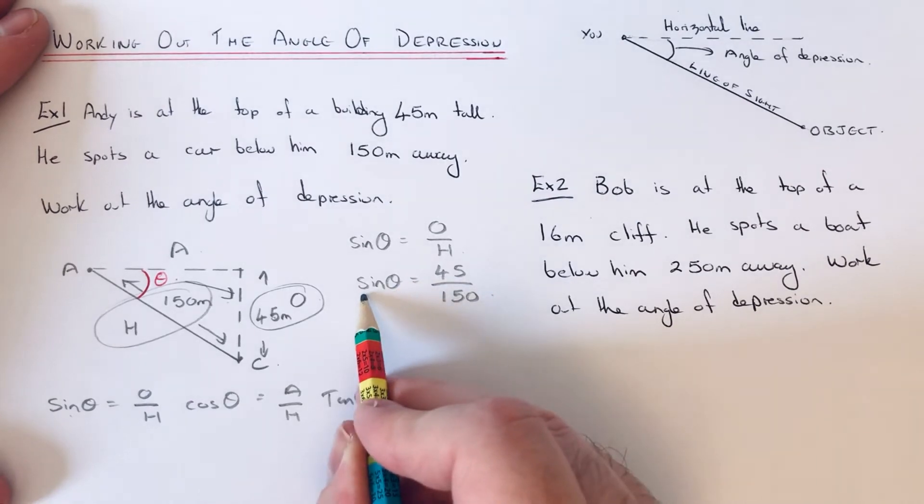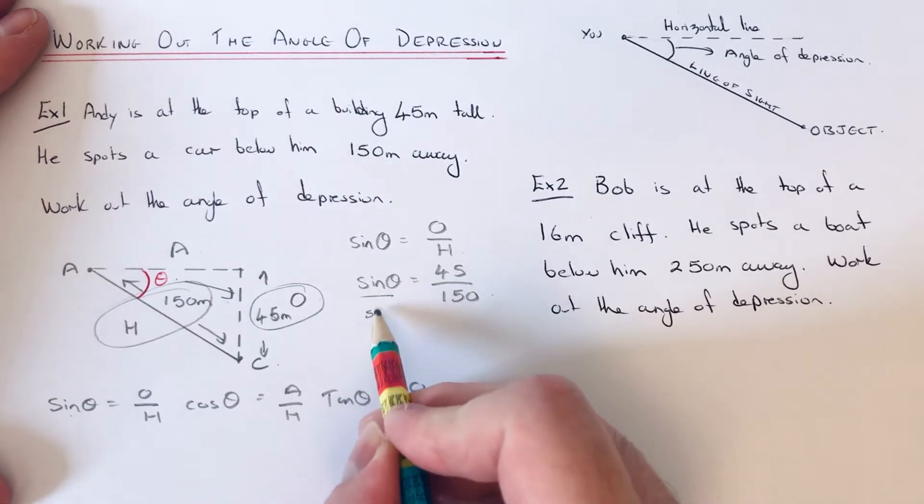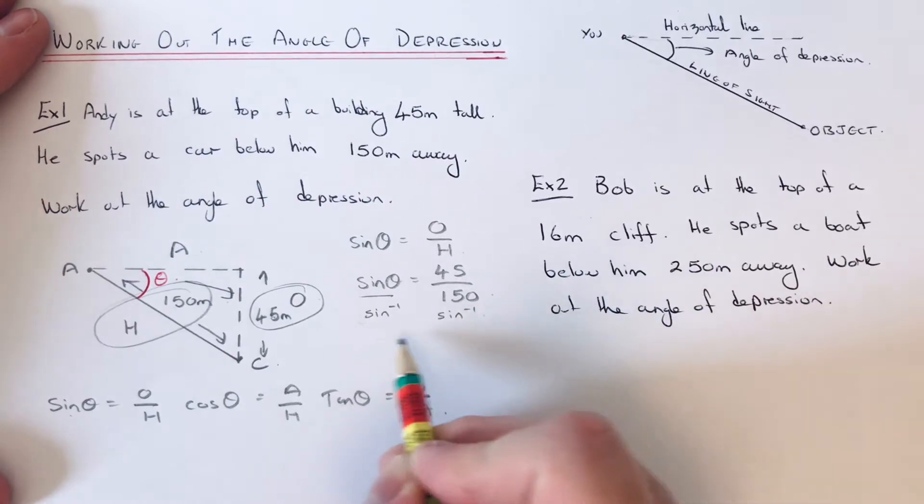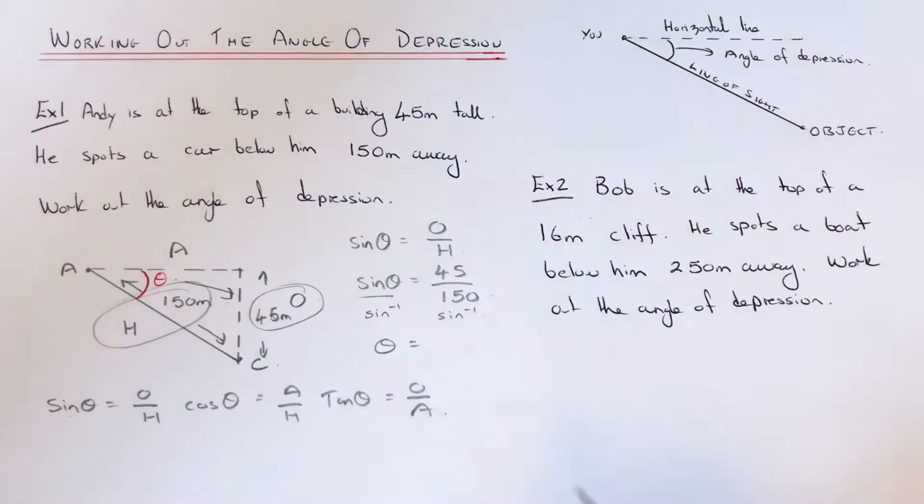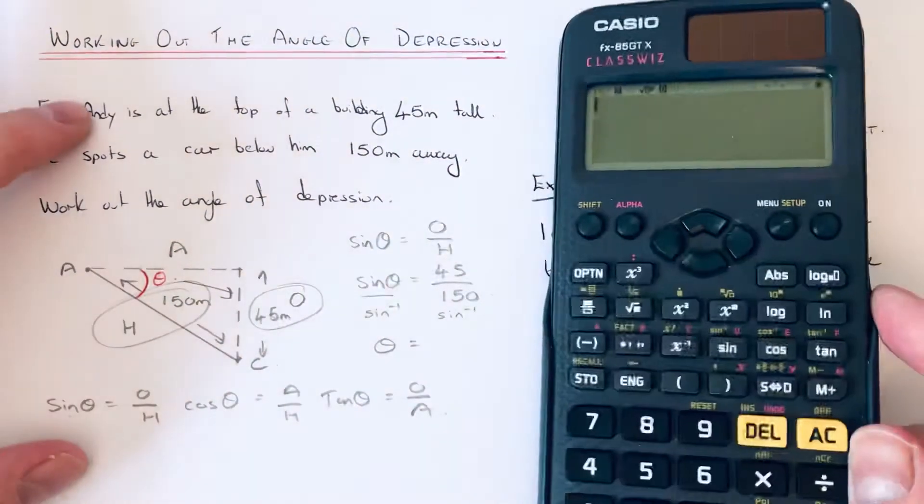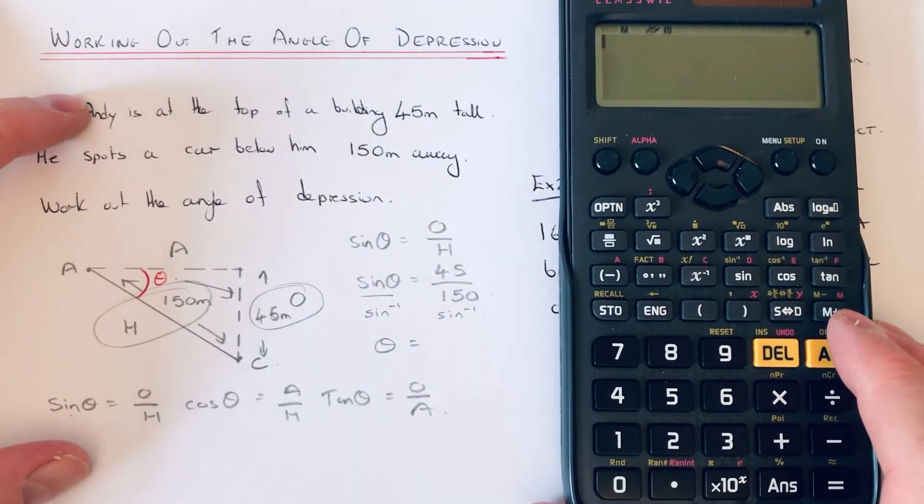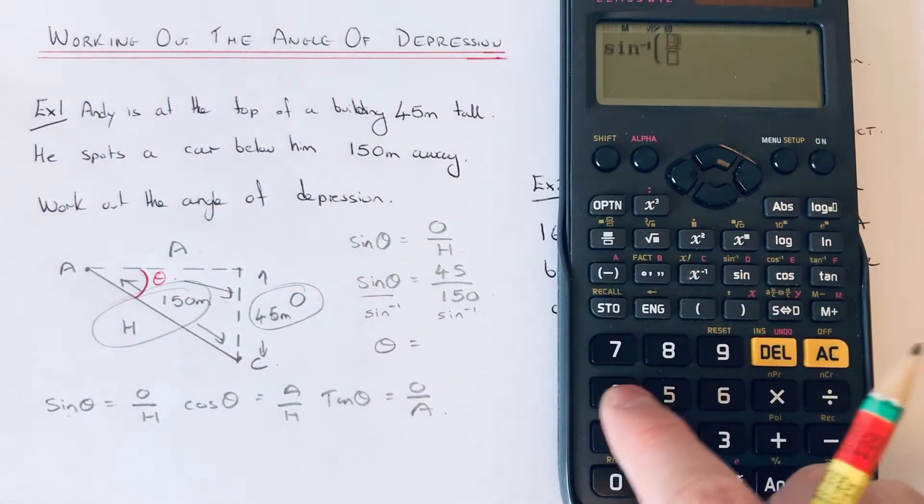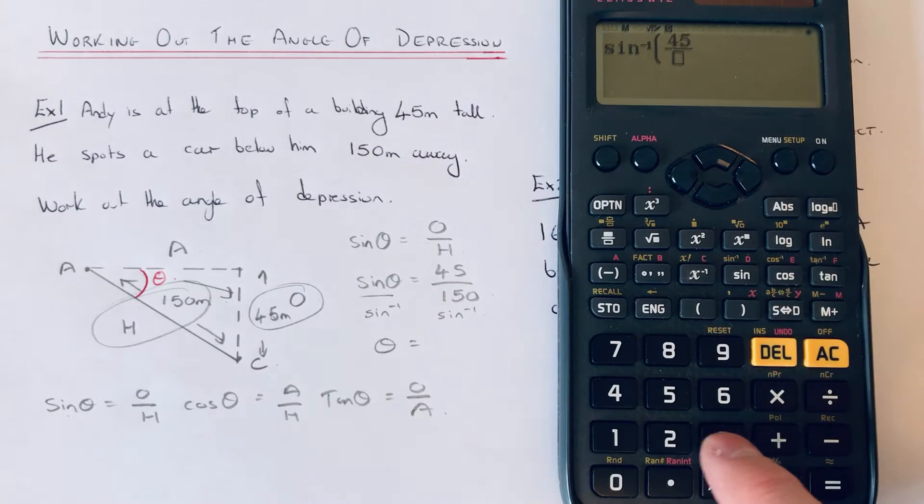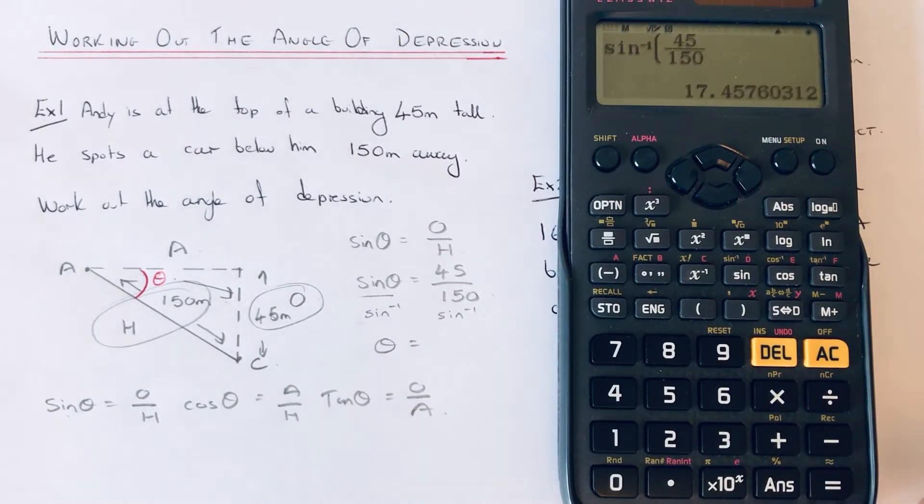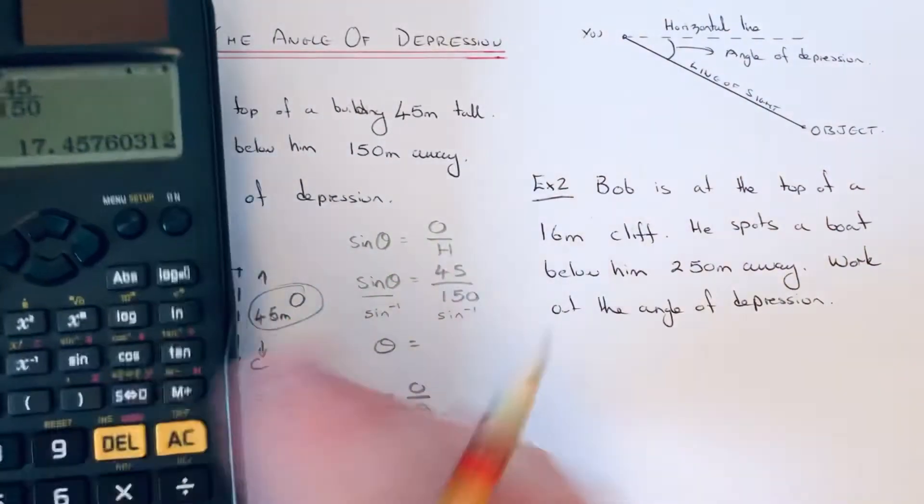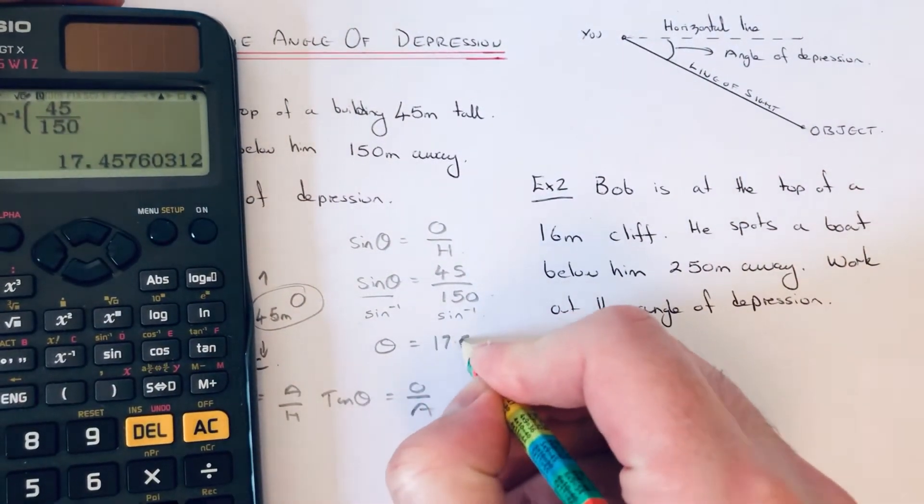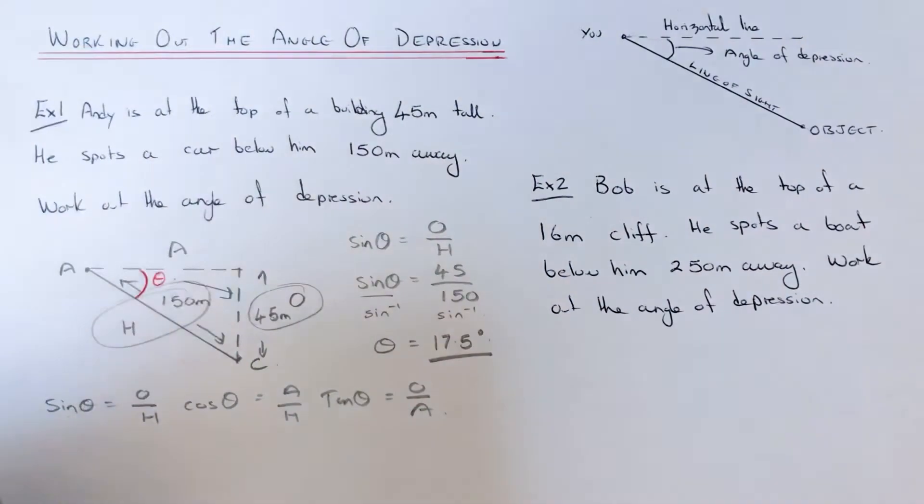Now to find theta, we've got to do the opposite to sin, which is sin inverse. So we need to sin inverse this fraction. If you get your scientific calculator and you type in shift sin, fraction 45 over 150, that will give an angle of depression of 17.5 degrees. And that's our final answer.